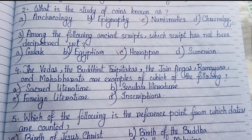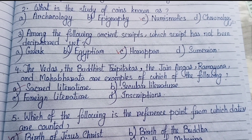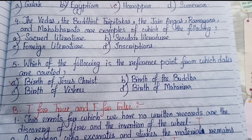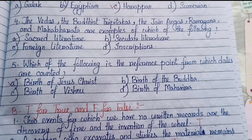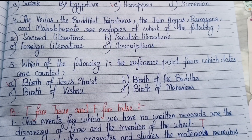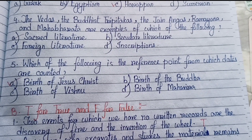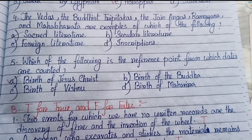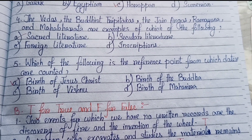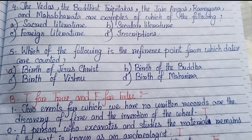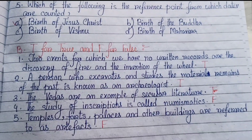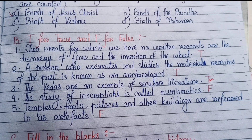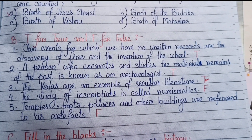Number four: the Vedas, the Buddhist Tri Pitakas, the Jain Angas, Ramayana and the Mahabharata are examples of which of the following? Answer is number A: Sacred literature. Number five: which of the following is the reference point from which dates are counted? Answer is number A: Birth of Jesus Christ.